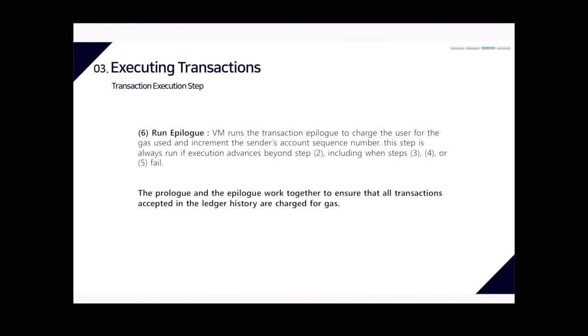Finally, step six is run epilogue. The virtual machine runs the transaction epilogue to charge the user for gas used and increment the sender's account sequence number. Like the prologue, the epilogue is a procedure of the Move Libra account module and runs with gas metering disabled. Transactions that do not proceed beyond the run prologue step are not appended to the ledger history. If a transaction advances past step two, the prologue has ensured the account has enough Libra coins to pay for the maximum gas units, and even if the transaction runs out of gas, the epilogue charges the maximum amount.